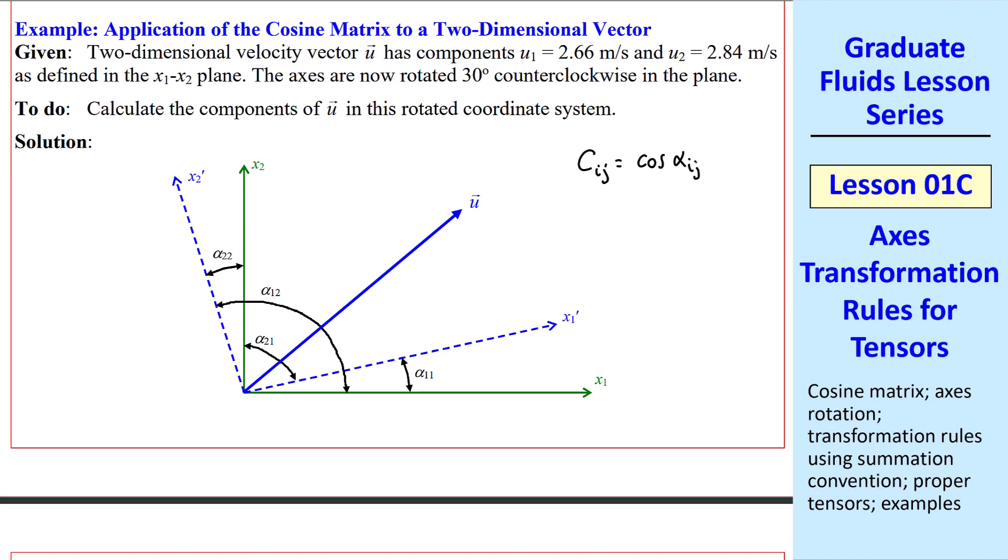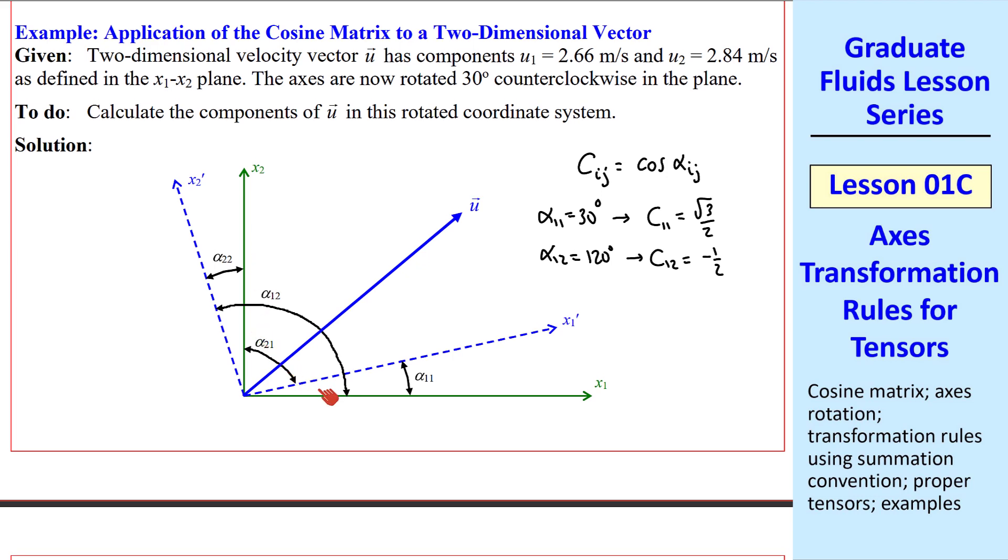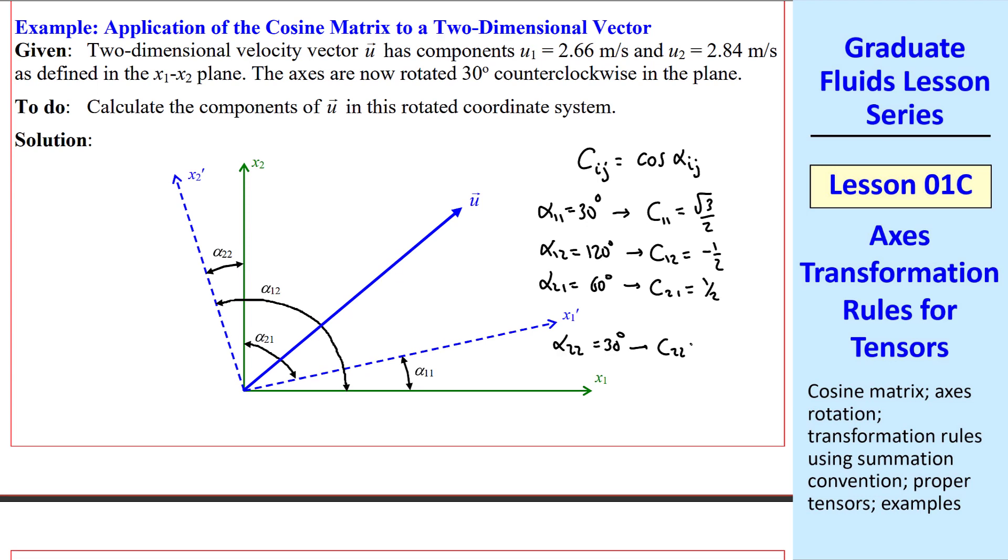Let's calculate the cosine matrix. I'll do only the two-dimensional components. Alpha_11 is 30 degrees, so c11 is cosine of 30 degrees, which is square root of 3 over 2. We can see from the sketch that alpha_12 is 90 plus 30, or 120 degrees, so c12 is negative 1 half. Similarly, alpha_21 is 90 minus 30, or 60 degrees, so c21 is 1 half. And then c22 is also square root of 3 over 2, since alpha_22 is also 30 degrees.